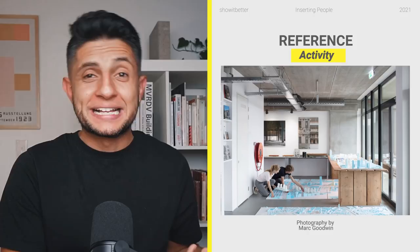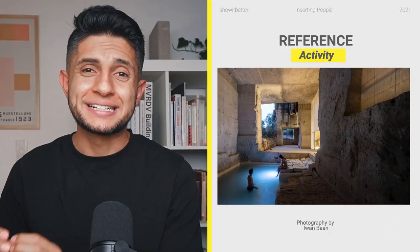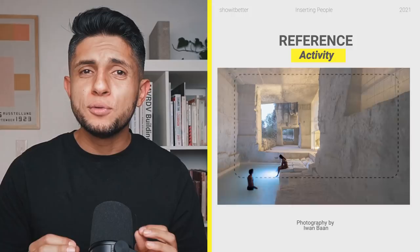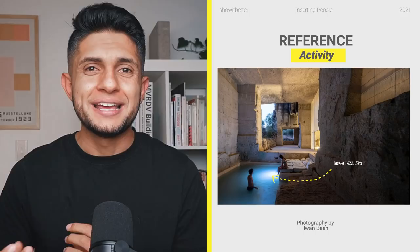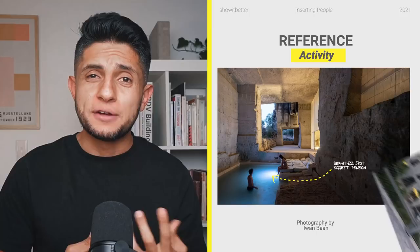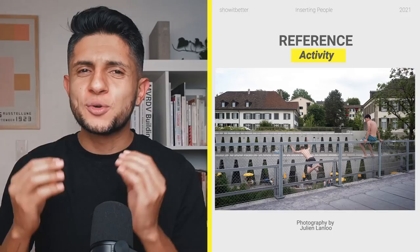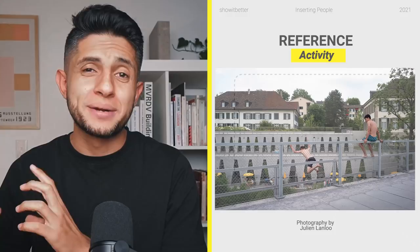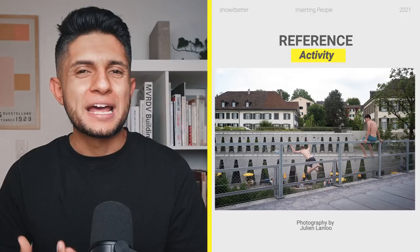In the photograph taken by Iwan Ban of the Canterra building by Ensemble Studio, he has placed two people using the water feature. Since the image is in low light, movement is detected and as the couple moves, the photograph records this. In another photograph by Julian Lanlu, there's also movement — movement which directs our eyes to the building and helps us understand the role of it in its urban context. Without these two boys, the photograph would not be as dynamic as it is.